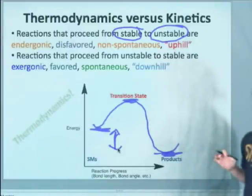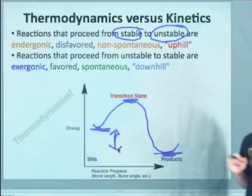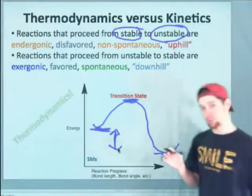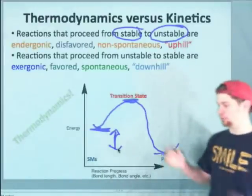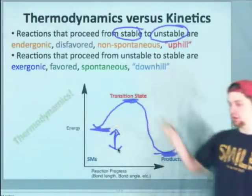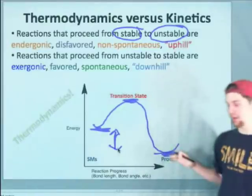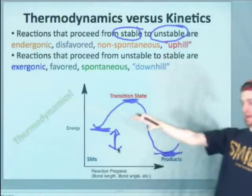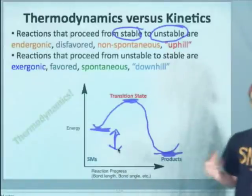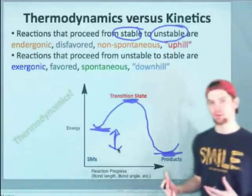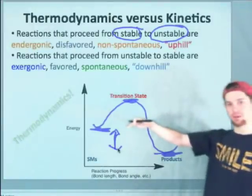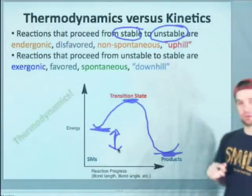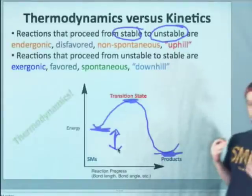This is an example of a favorable or spontaneous or downhill reaction where in going from the starting materials to the products, we lower the energy of the system. Because of that energy lowering, you can see intuitively why this process would be favorable, because we're going from a high energy unstable situation in the starting materials to a more stable situation in the products. So this is thermodynamics.